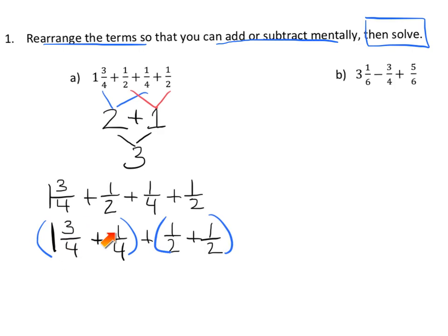So, 1 and 3 quarters plus 1 quarter, that's equal to 2. And 1 half plus 1 half, that's equal to 1. And now we have 2 plus 1, and that equals 3.